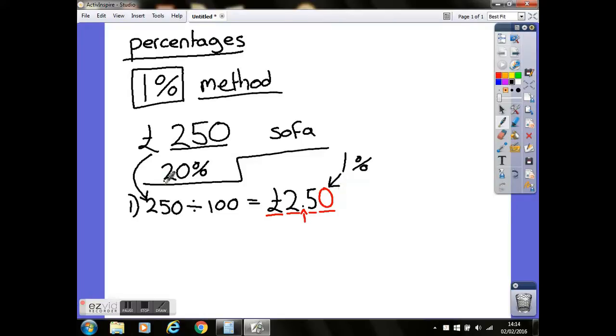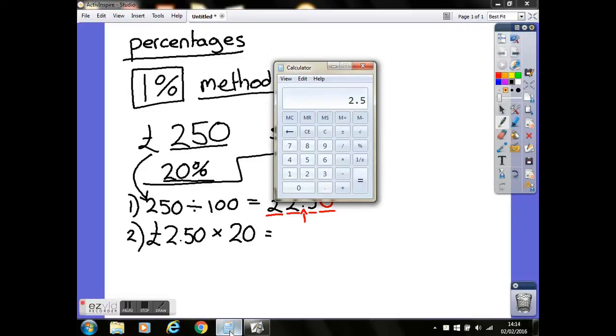If we're now looking for 20%, our second step is to take our £2.50 and multiply it by whatever percentage we're looking for. In our case it's 20, but this could be anything—17.2, 100.5, literally any number. So 2.5 multiplied by 20 equals £50.